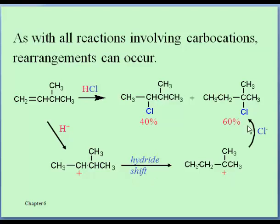We end up making more than anything else the molecule on the right — sixty percent of the product puts the chlorine on the second carbon from the right. That implies it was immediately preceded by the corresponding tertiary carbocation. Without that rearrangement, the other product is what we would expect, and we only get forty percent of it. As noted in chapter four, we can't always predict when rearrangements occur, but if they do we can make sense of why a given product forms the way it does. This is considered evidence for the existence of carbocations.